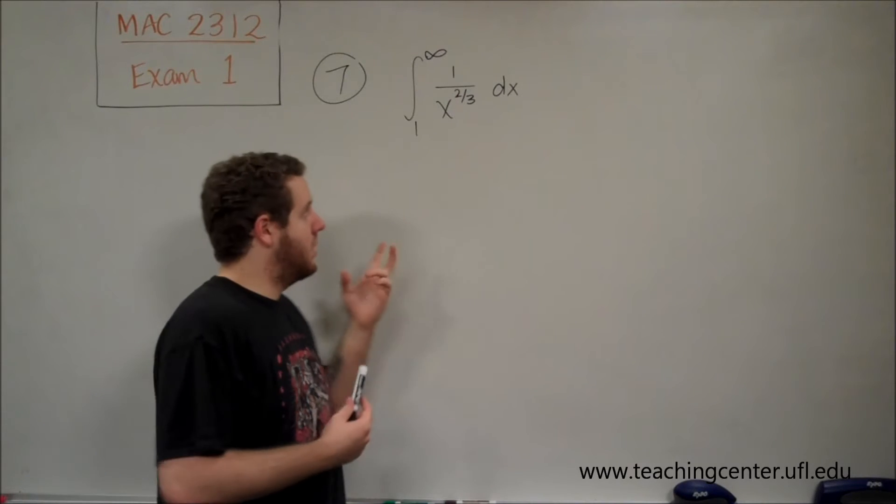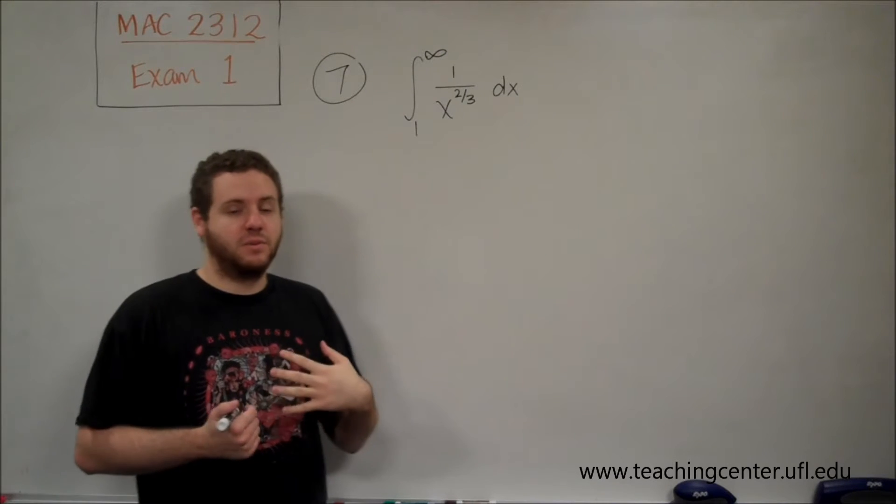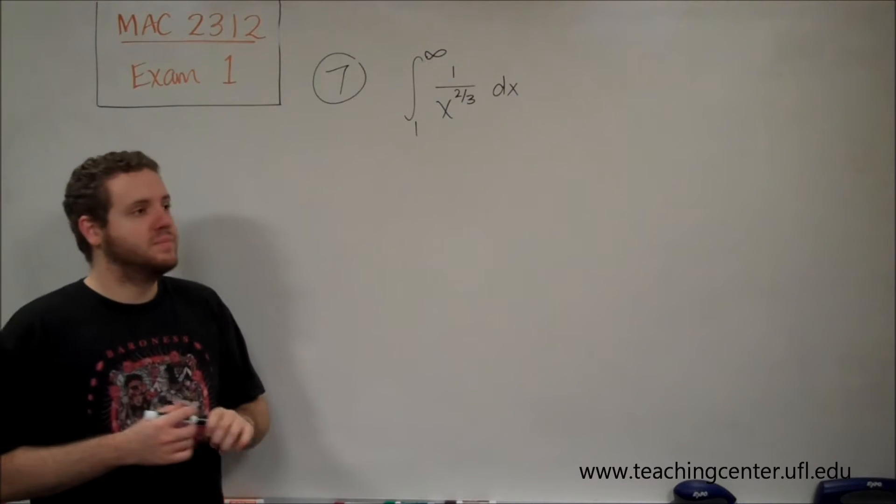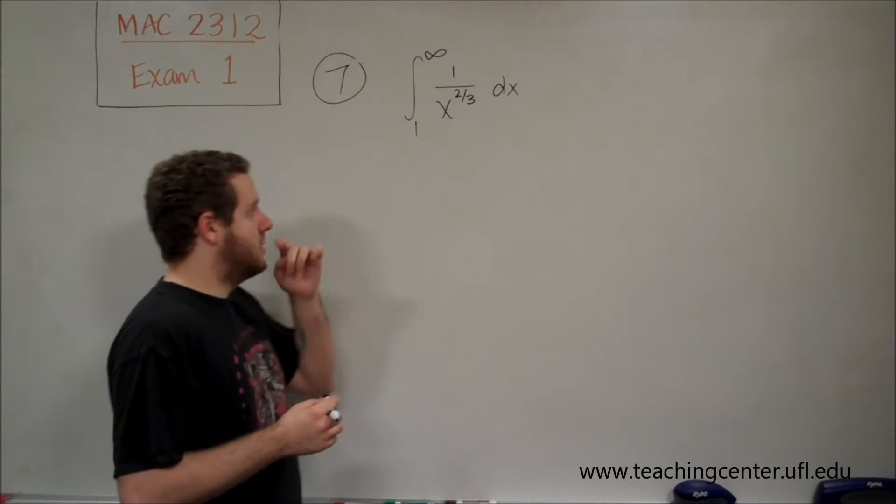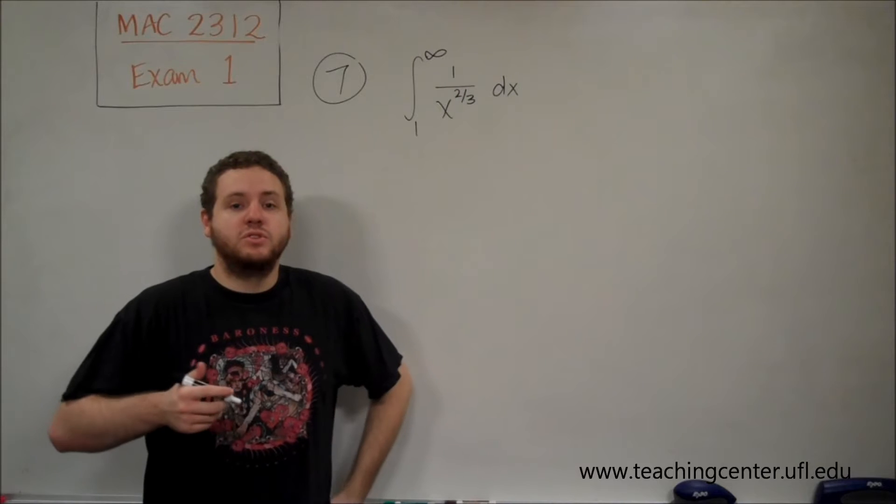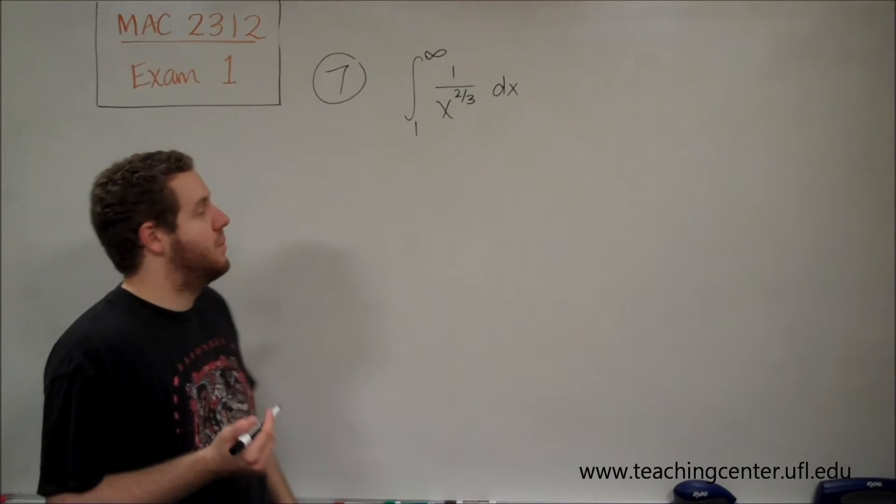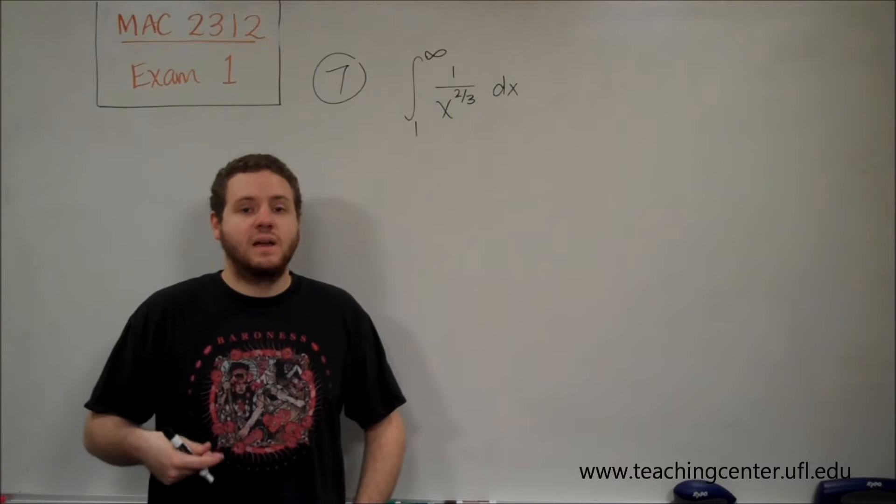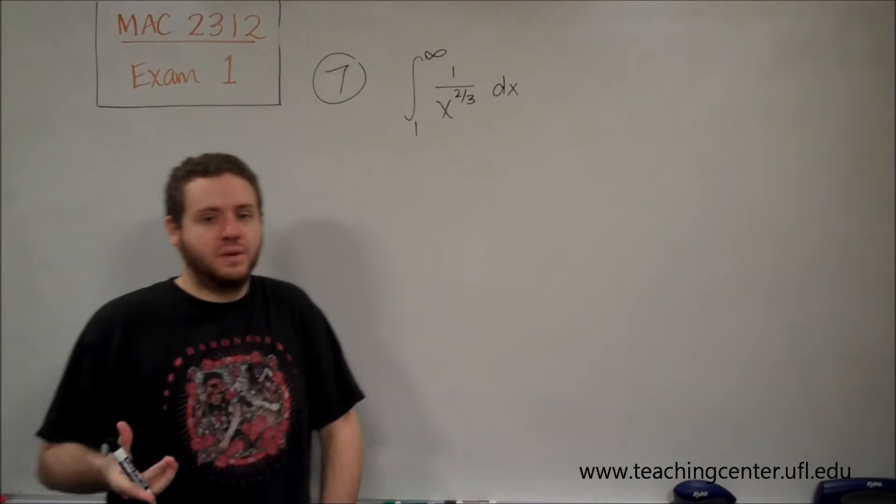Most of you will probably just approach this by using your p-series test that you've memorized, but I'm going to show you how you can prove it here. To show that an improper integral is convergent or divergent, you just need to evaluate the definite integral with an upper bound that approaches infinity. If you get a definite answer, then it's convergent, and if you don't, then it's divergent.